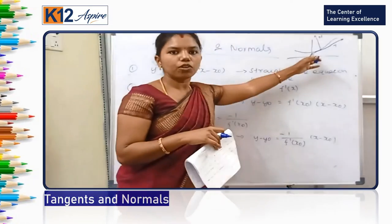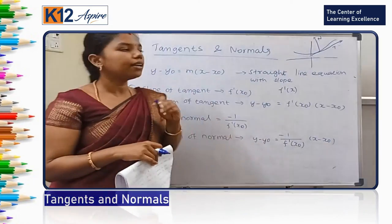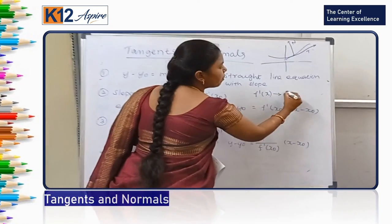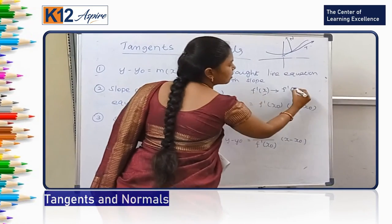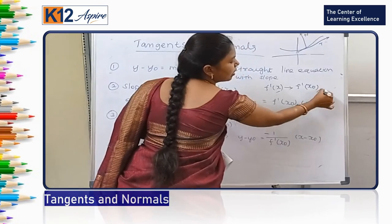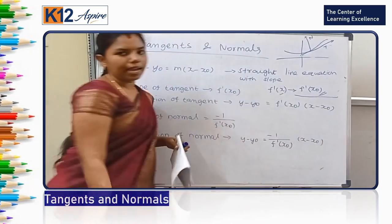Then at a particular point, we need to find the tangent line. So we need to substitute that point value instead of x. So f'(x₀) - it is the slope of the tangent line.